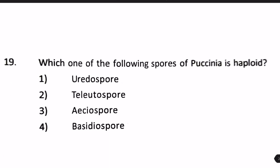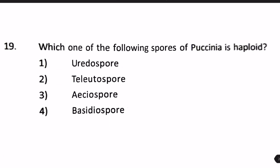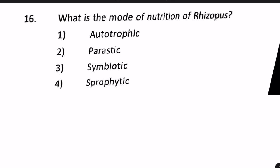Next question: Which spore of Puccinia is haploid? Options are uredospores, teliospores, aeciospores, and basidiospores. Uredospores, teliospores, and basidiospores are diploids. The answer is aeciospores.